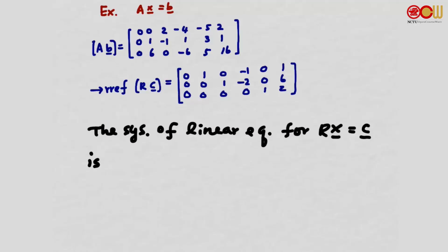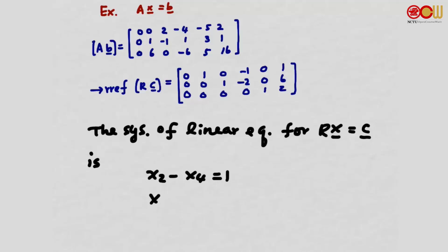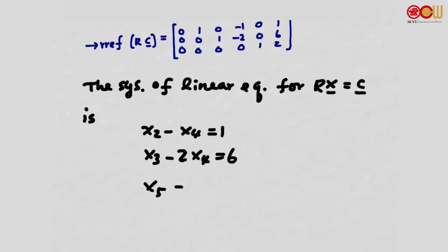The system of linear equations for Rx = c will be: x2 minus x4 equals 1 — where x1, x2, x3, x4, x5 are the variables and 1 is the constant term. The coefficient for x2 is 1, for x4 is -1, and for x1, x3, x5 are 0. Similarly, the second row gives x3 minus 2·x4 = 6, and x5 = 2.